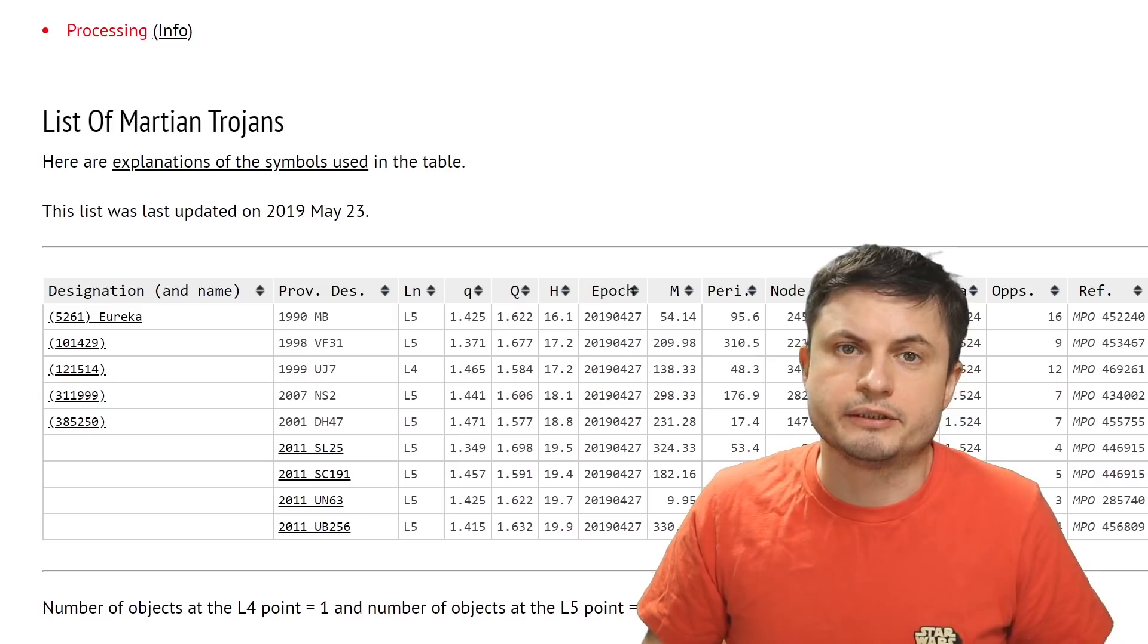We believe this is really because of the gravitational interactions with Jupiter, meaning that Jupiter probably just stole all of them and now they are orbiting the other planet. But surprisingly, Mars has nine of them and you can once again learn more about them in the link in the description below.